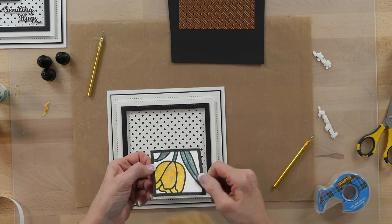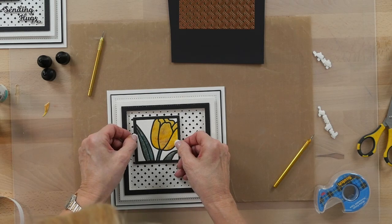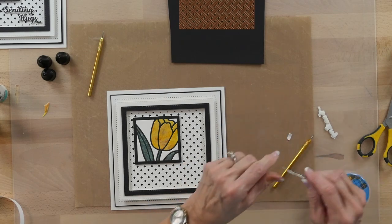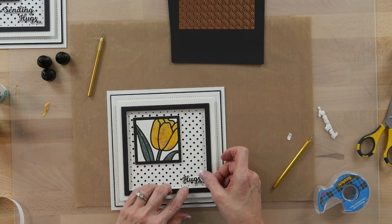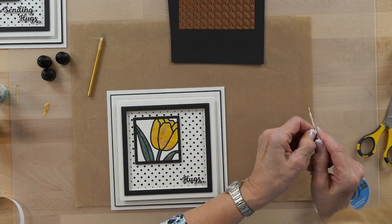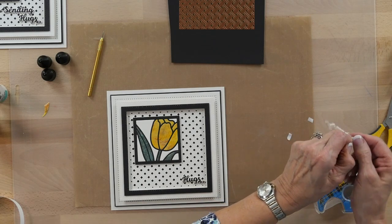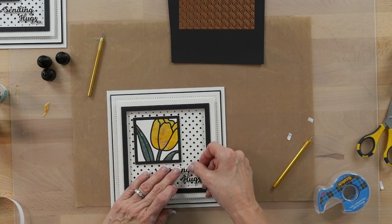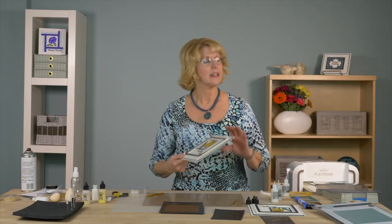You can see you get all that shimmer from that pixie powder coming through. I'm going to put that right up into the top corner, offset it. I've done the sending hugs in a black font on a white shadow, so I'm going to put that down there, sort of offset that into the corner. Let's get the mounting foam pieces off that. I'm going to just do sort of a diagonal here into this lower corner. Straighten that up a little bit. There you go.